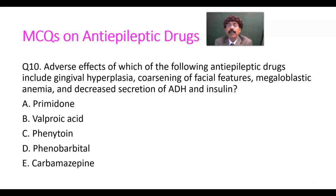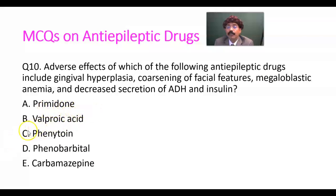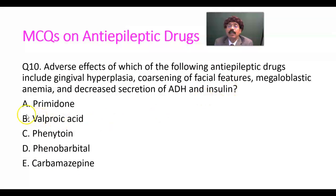Question number ten: adverse effects of which of the following anti-epileptic drugs include gingival hyperplasia, coarsening of facial features, megaloblastic anemia, and decreased secretion of ADH and insulin, leading to hyperglycemia and electrolyte imbalance? Megaloblastic anemia is due to vitamin B12 deficiency. Choices: primidone, valproic acid, phenytoin, phenobarbital, carbamazepine. Answer is C — phenytoin.